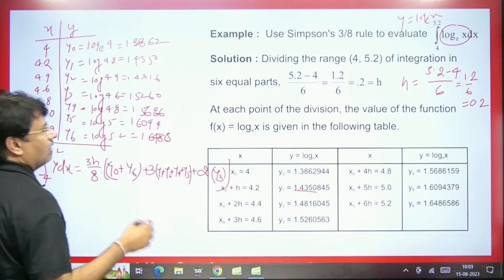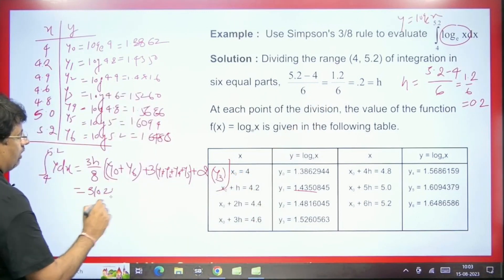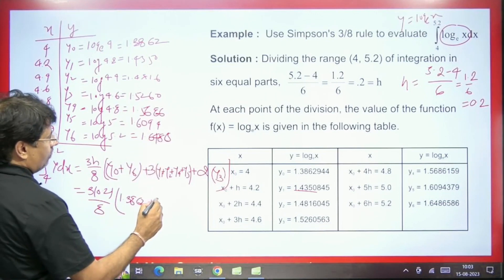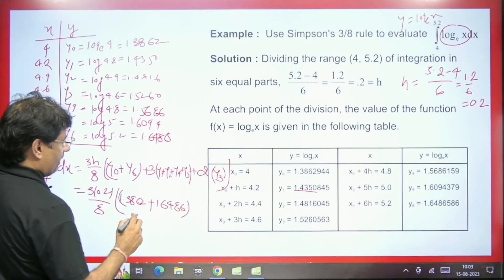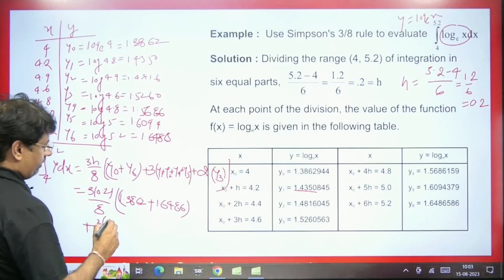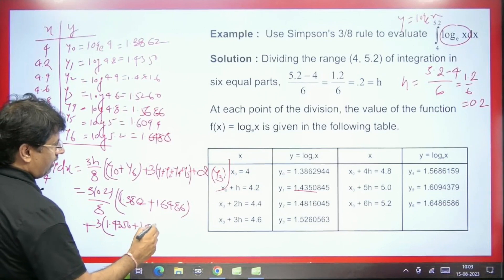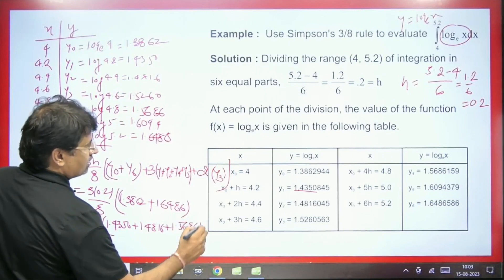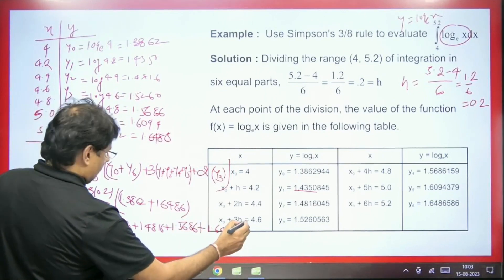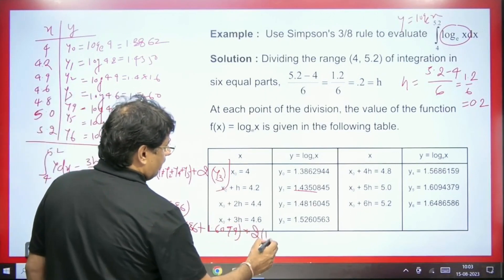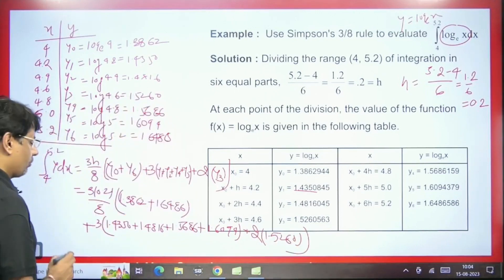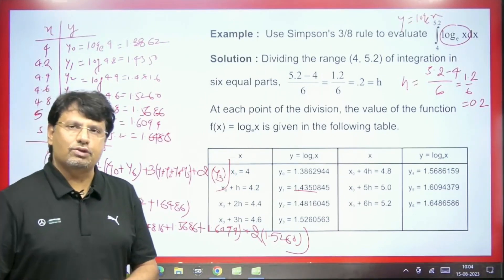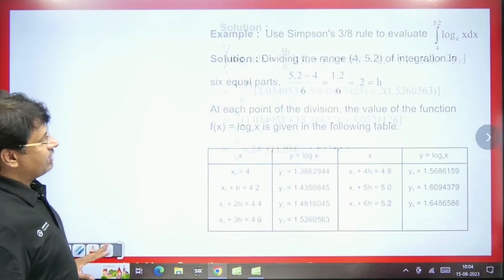In this, the value of h that we have is 0.2. So this will be 3 into 0.2 divided by 8. The value of y0, we have it given as 1.3862 plus y6, 1.6486. Here I am writing plus 3 into y1, 1.4350 plus y2, 1.4816, plus y4, 1.5686, plus value of y5, 1.6094. We will keep this plus 2 into y3, 1.5260. You have to calculate the value of this using a calculator. The answer we will get will be 1.8278. This way we can easily solve it.